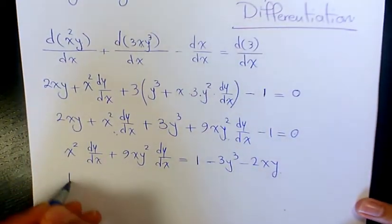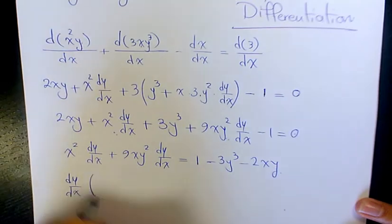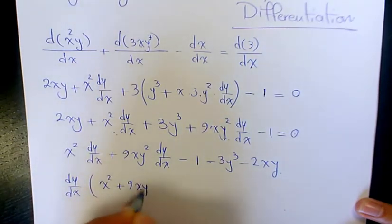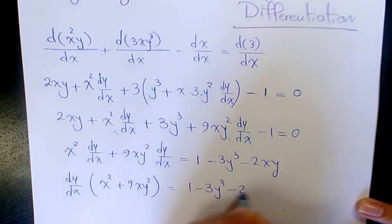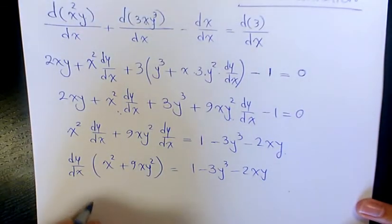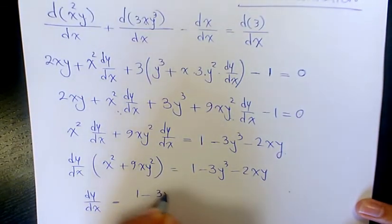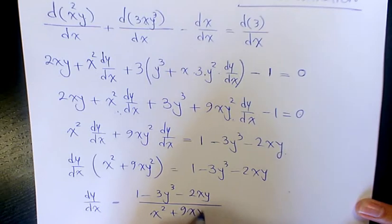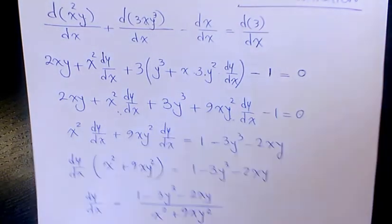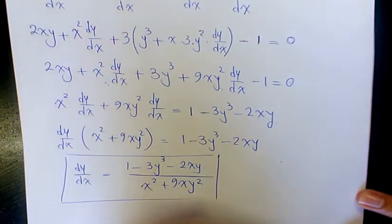Then I factor out dy over dx, getting x squared plus 9xy squared equals 1 minus 3y cubed minus 2xy. So dy over dx is going to be 1 minus 3y cubed minus 2xy, divided by x squared plus 9xy squared. This is the final answer.